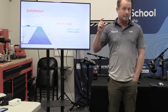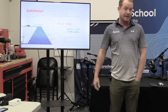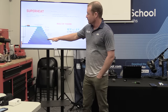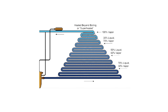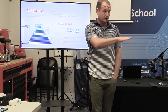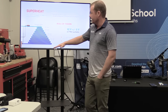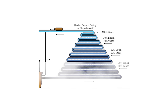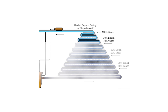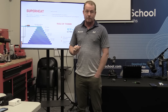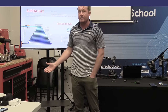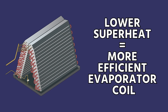If superheat is a low number, that means it picked up very little heat by the time you measured it outside. If it's a high number, it picked up a lot of heat — which tells us it's not getting enough liquid. How full is the evaporator coil with boiling refrigerant? More boiling refrigerant is better. Lower superheat equals a more efficient evaporator coil.